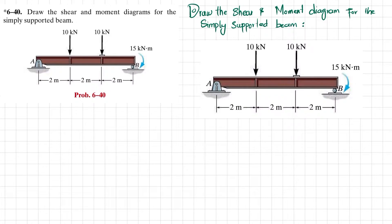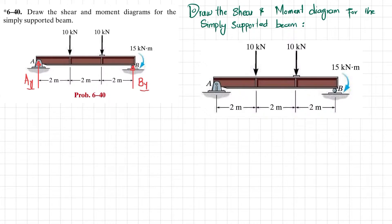The first step is: if you remove the pin support at point A, you will have a reaction force — let this be A_y. If you remove the roller support, there will be a vertical force B_y. These reaction forces are unknown, so we will find them using equations of equilibrium.